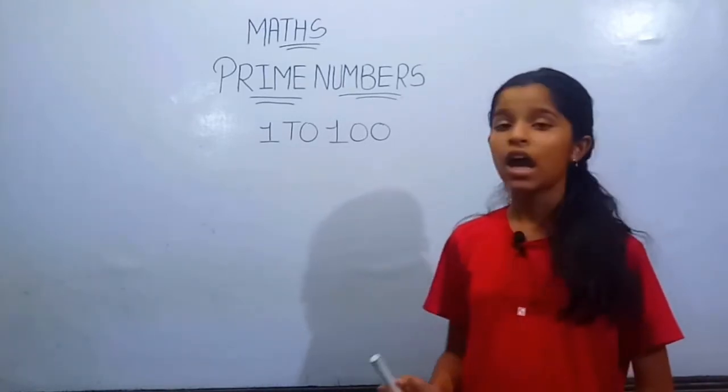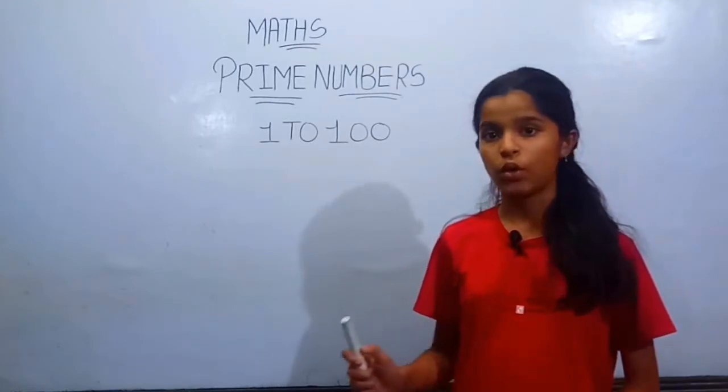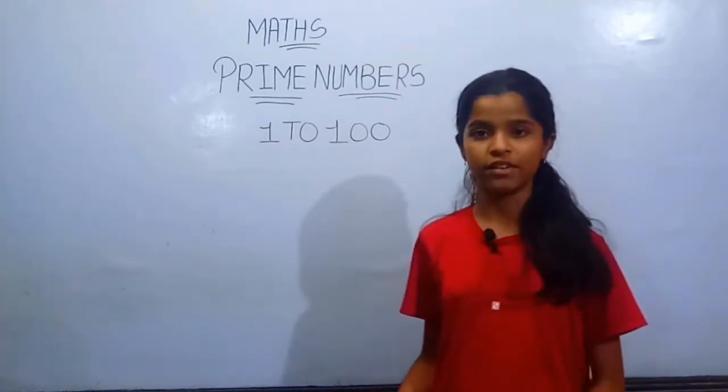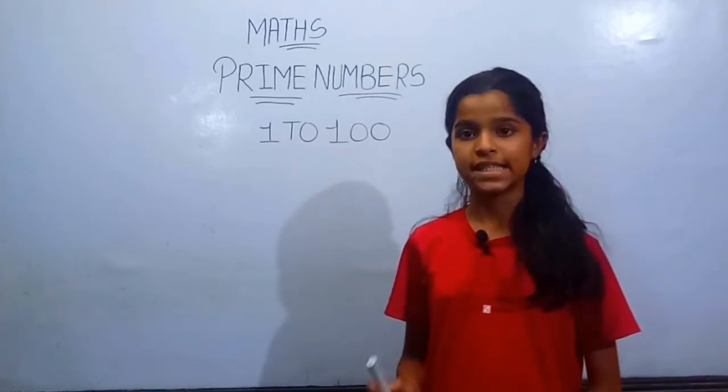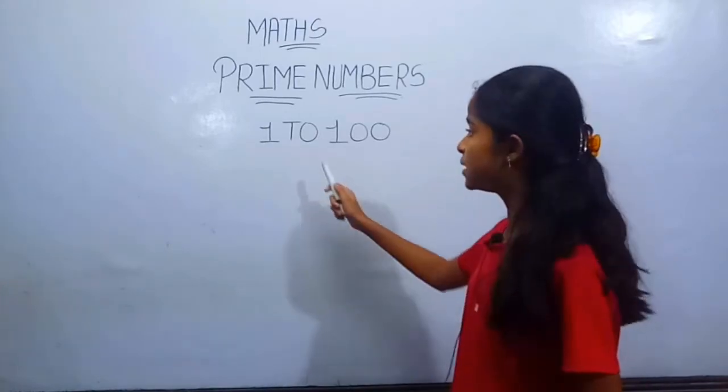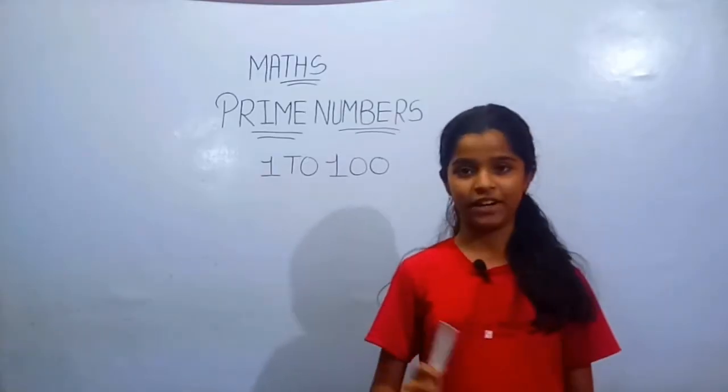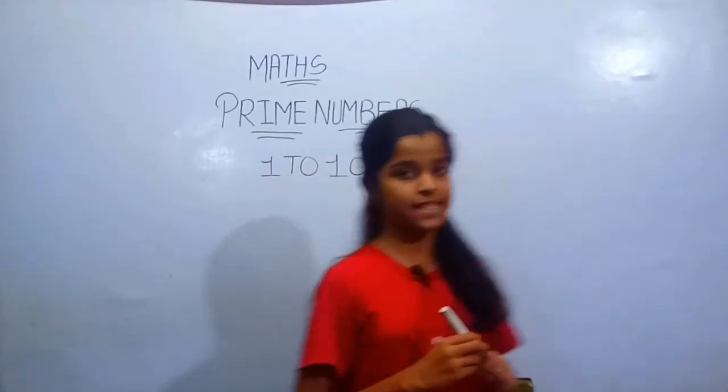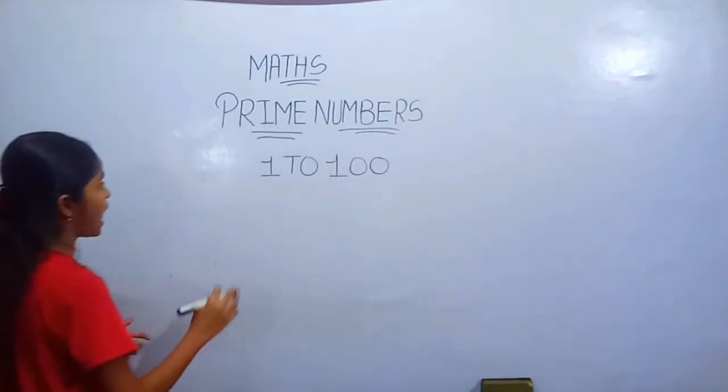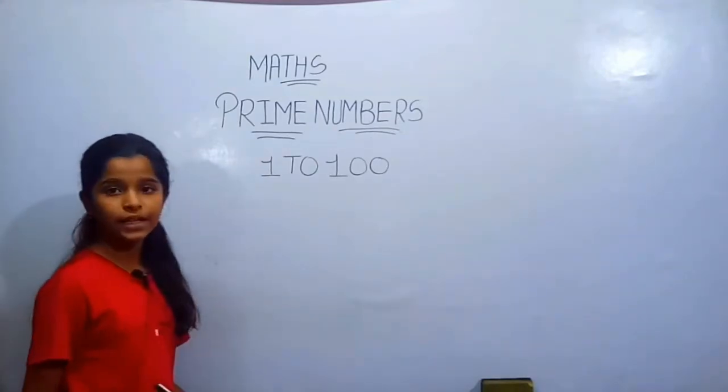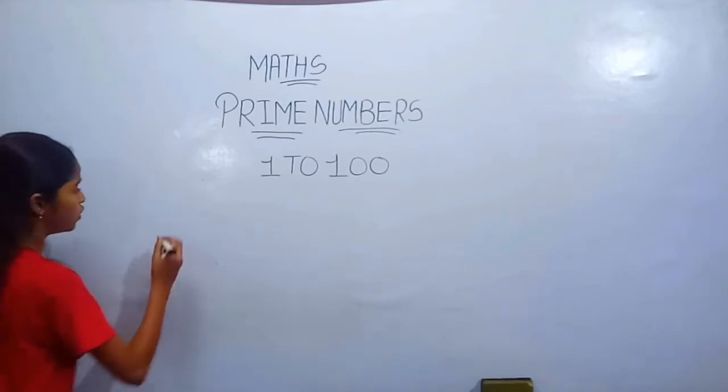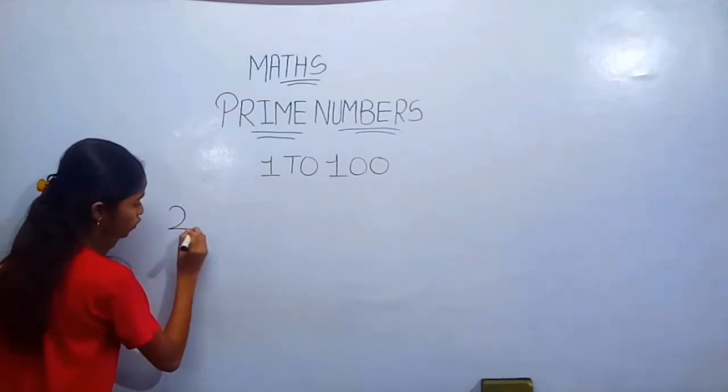So let's see in our today's video prime numbers from 1 to 100. Let's see how many prime numbers and which numbers are the prime numbers from 1 to 100. From 1 to 100, there are total 25 prime numbers.